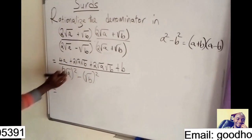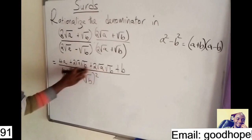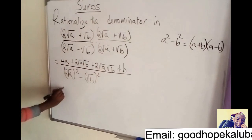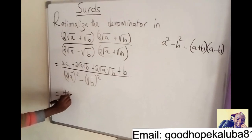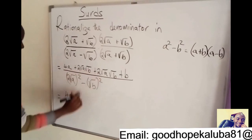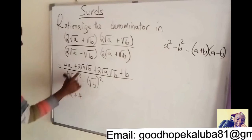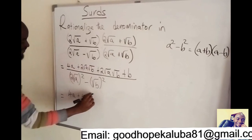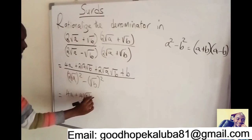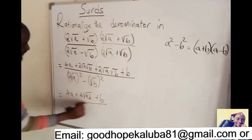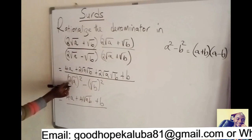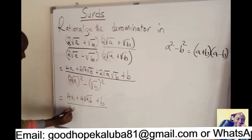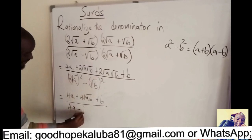So this will be equal to, I can simplify these two terms here because they are similar, they are like terms. So this will be 4A plus, this plus that, we are going to get 4 square root of AB, then plus B. Then down here, 2 squared, I'm going to get 4, and this squared, I'll get A, then minus B.